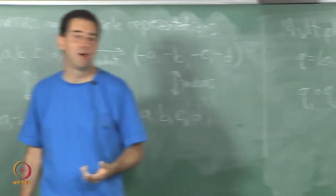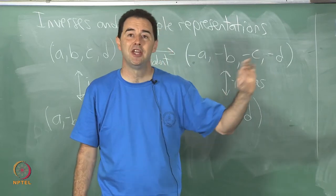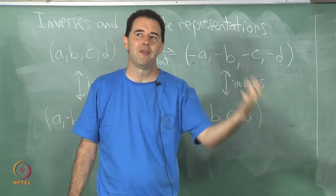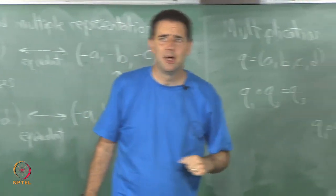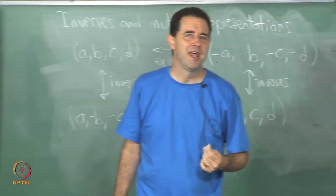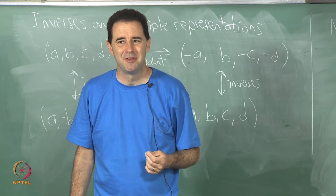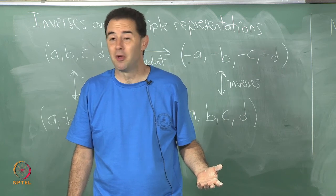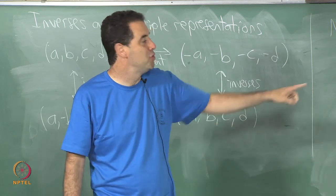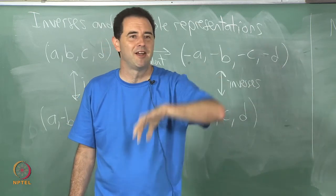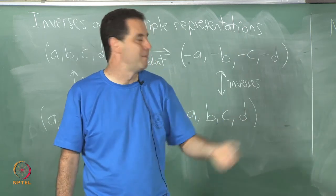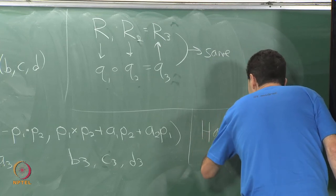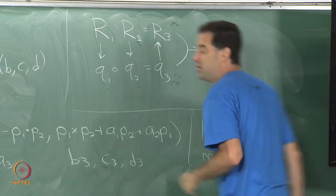Another key advantage: small changes in quaternion parameters correspond to the same small changes in rotation of the rigid body, regardless of where that rotation is in the space of rotations. This also means that if you pick a unit quaternion uniformly at random — a random point on the sphere — you get perfectly uniform coverage of all orientations. In contrast, picking Euler angles uniformly at random does not yield uniform coverage. This property is related to what is called Haar measure if you want to study the mathematics further.